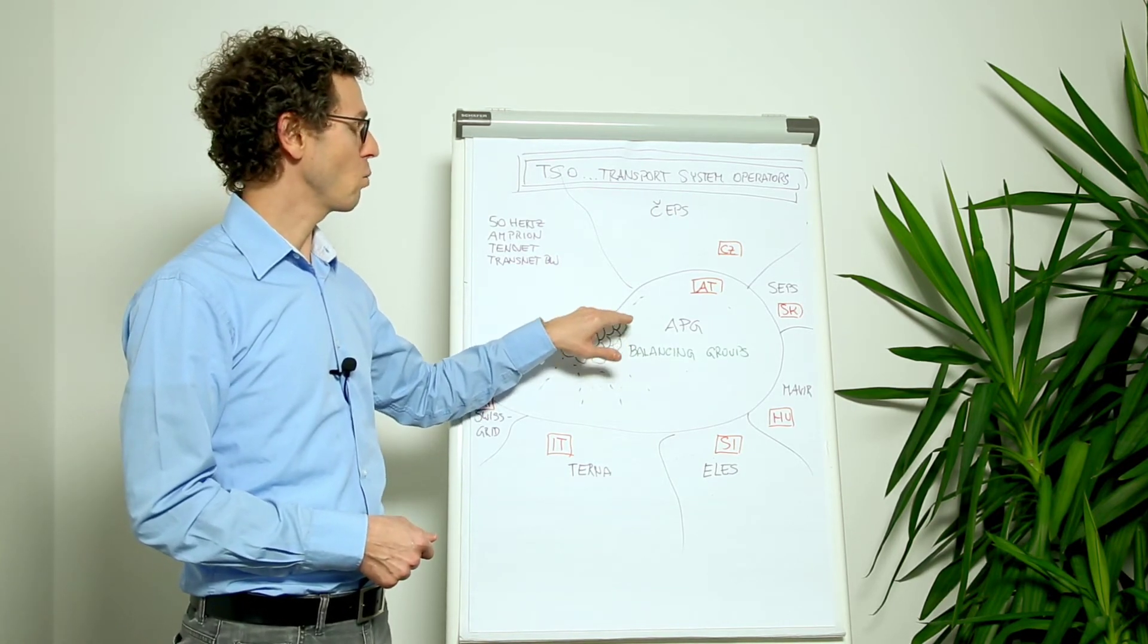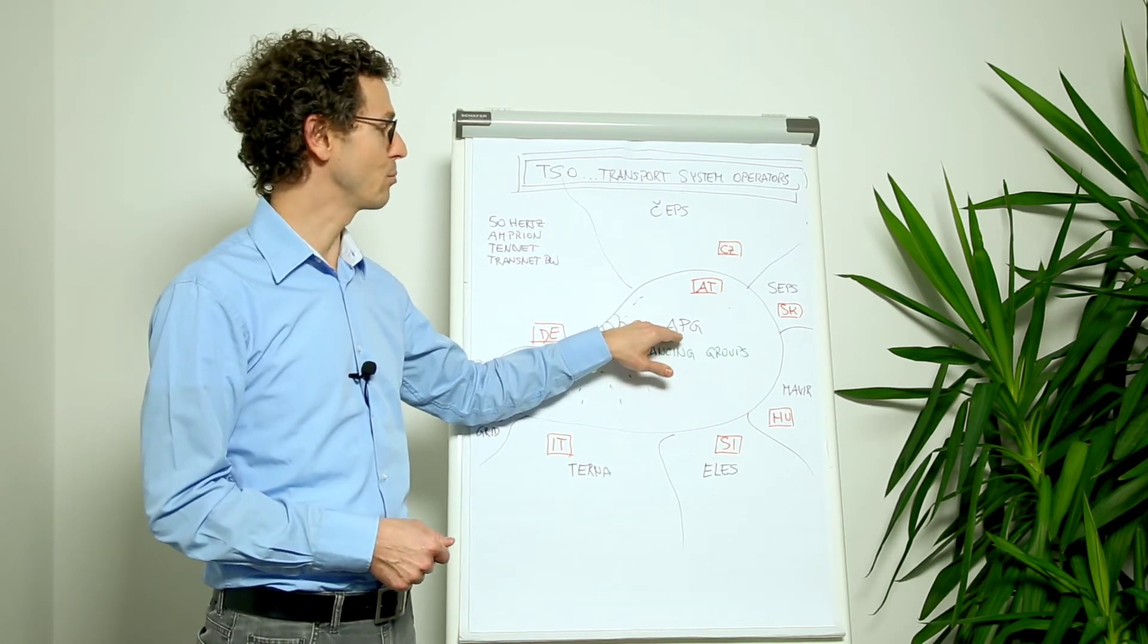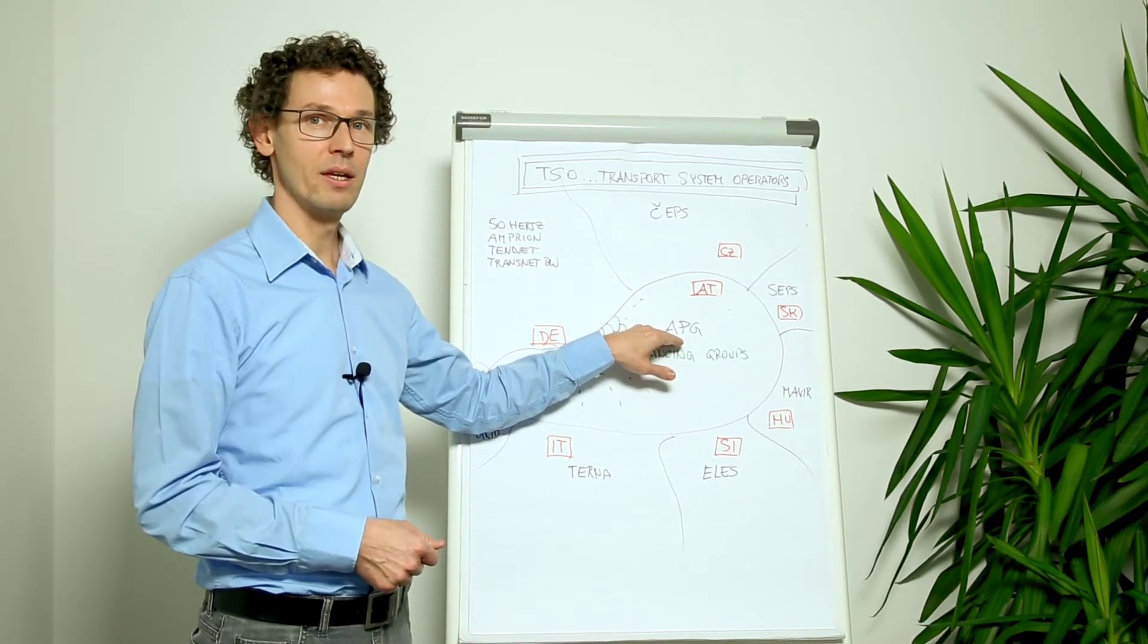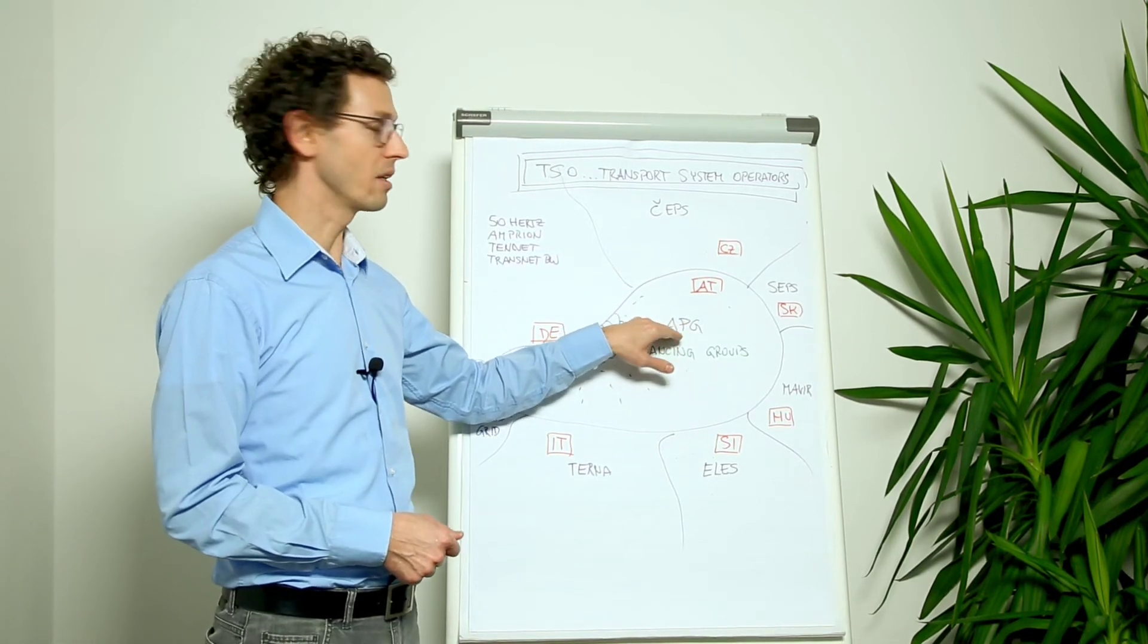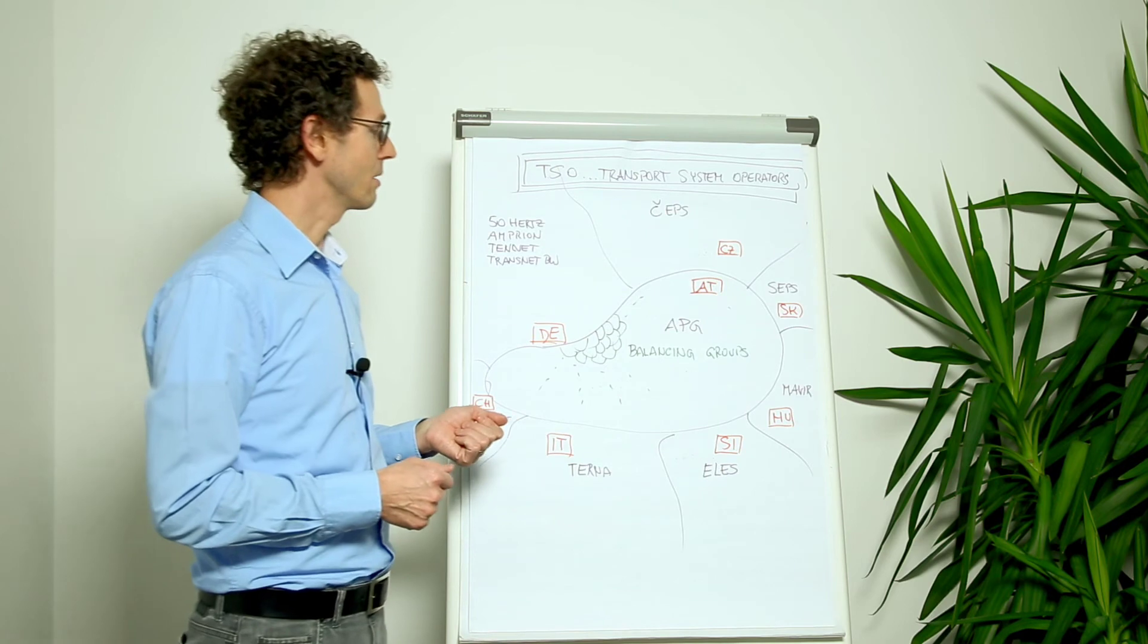If they don't do that when the time of the delivery of the energy comes, then the APG runs some power plant to compensate if there is more consumption or less consumption than there should be.